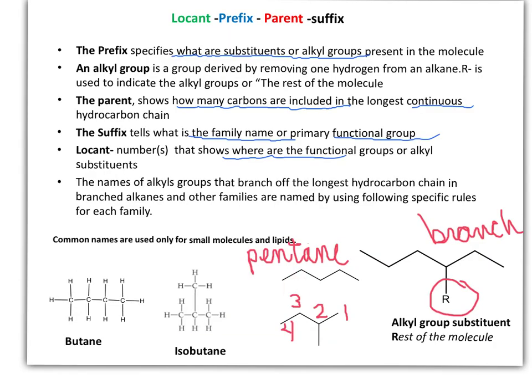Small substances can be named following IUPAC rules or using trivial or common names. For instance, butane is a straight alkane that is four carbons long. It has an isomer, isobutane, which is three carbons long and has one branch.